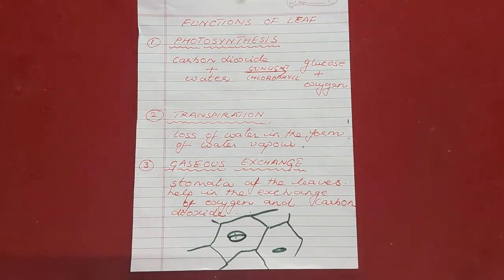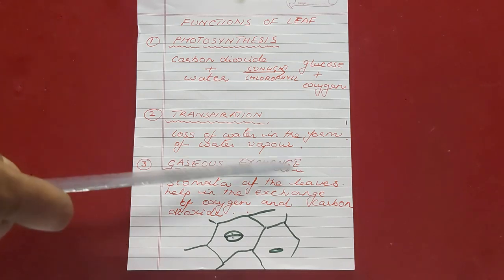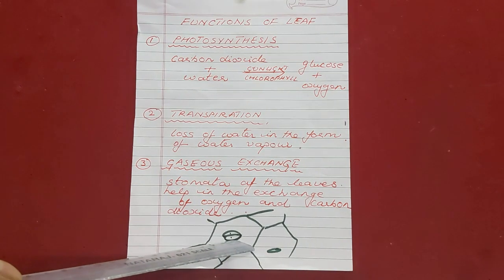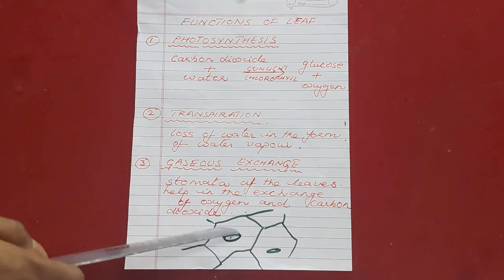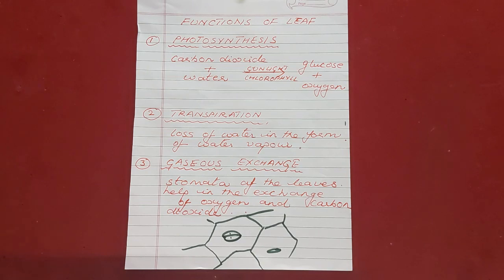Plants lose water in the form of water vapor through the small stomata. Stomata are the tiny, minute openings present mostly on the lower surface of the leaves, surrounded by guard cells. Transpiration is the loss of water in the form of water vapor through the stomata of the leaf. It provides a cooling effect to the plant body, and most transpiration usually takes place through the lower surface of the leaf.